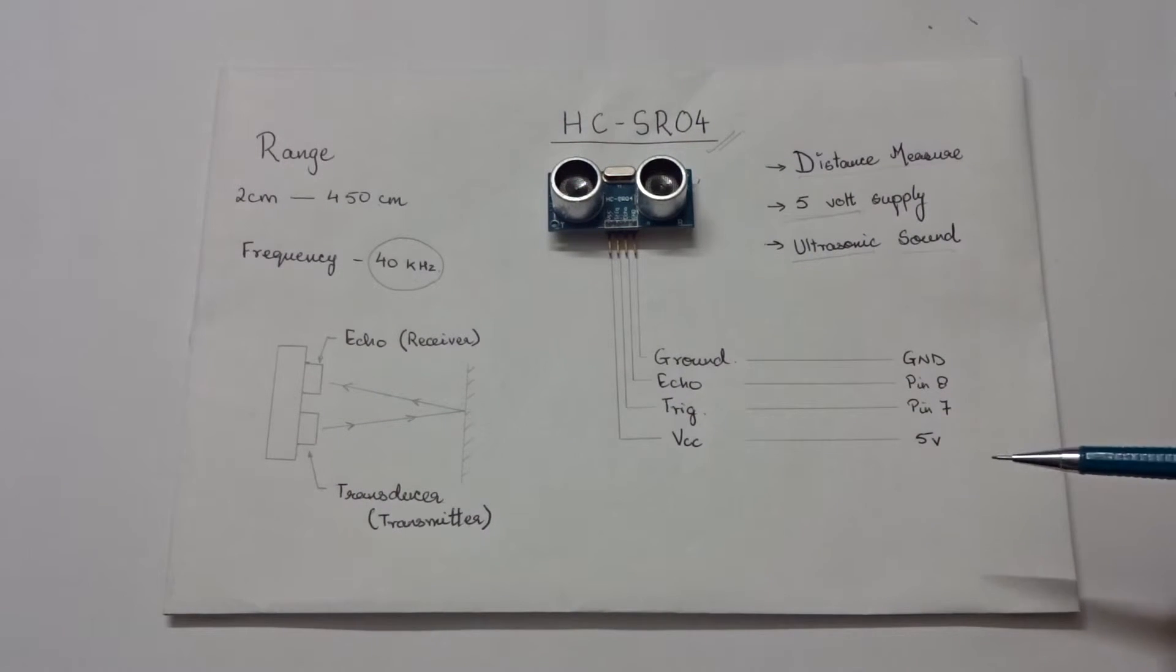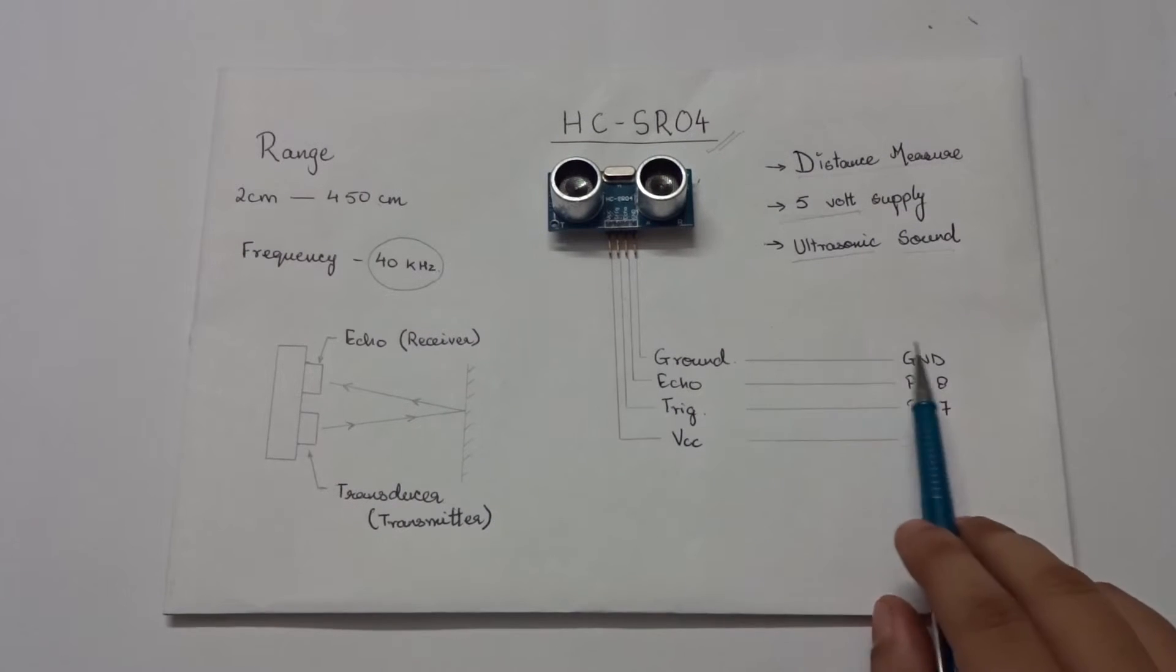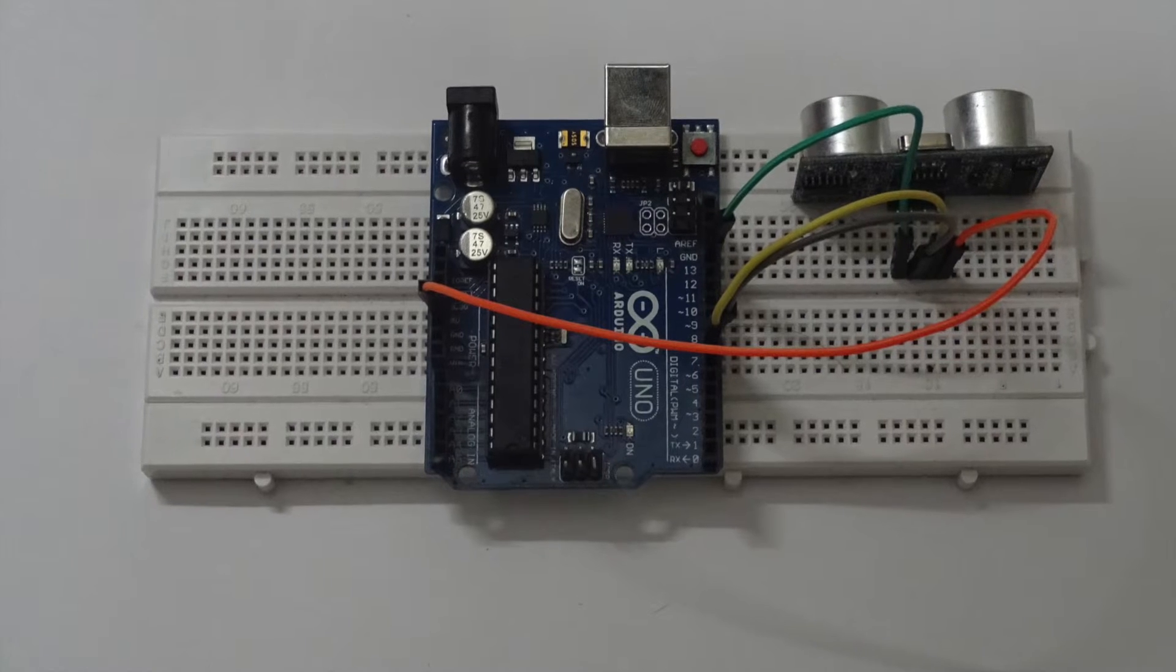Let's connect the trigger pin to a digital pin, say pin 7 and we connect echo pin to a digital pin 8. The ground is connected to the ground of the Arduino and VCC is connected to the 5V supply of Arduino. The connections are now ready.